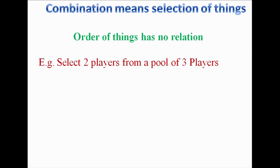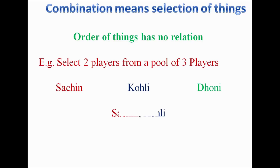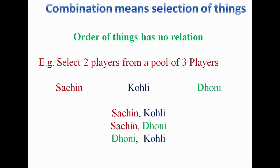For example, if we have to select 2 players from 3 players, how many ways can we do it? Say we have three players: Sachin, Dhoni, and Kohli. We can select Sachin and Kohli, or any pair. The order has no relation — selecting Kohli then Sachin is the same as Sachin then Kohli.